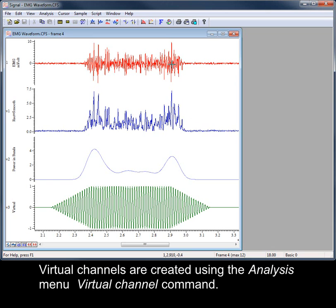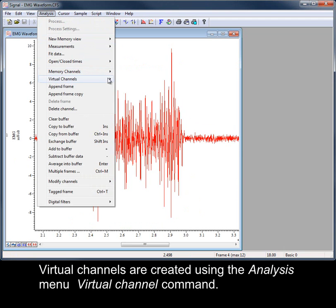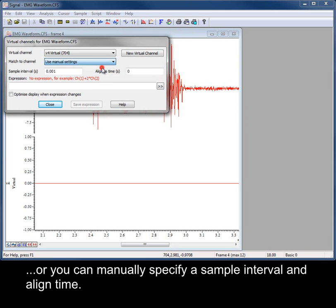Virtual channels are created using the Analysis menu Virtual Channel command. The new virtual channel requires a sampling rate. This can be matched to an existing waveform channel using the drop-down list, or you can manually specify a sample interval and a line time.